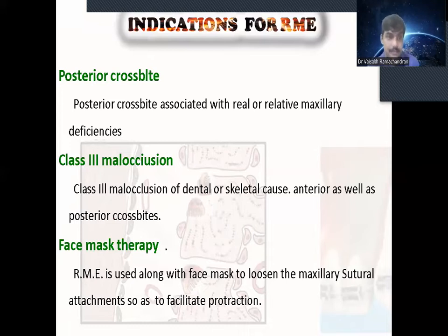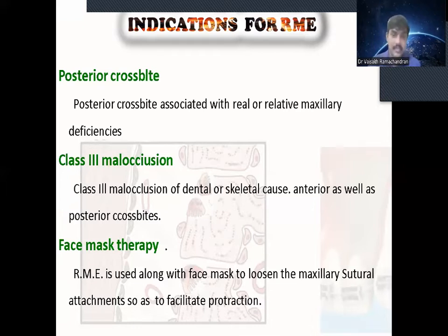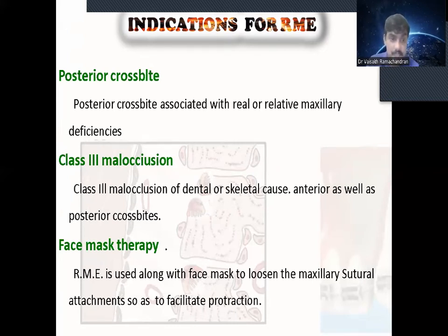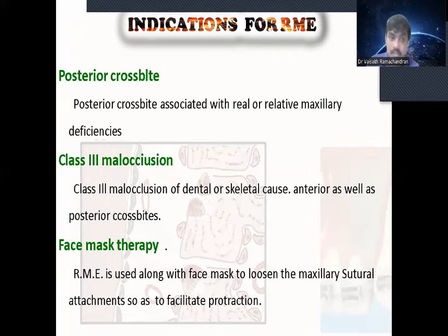What are the indications of RME? The first one is posterior crossbite. The posterior crossbite is associated with real or relative maxillary deficiency. If there is any maxillary deficiency, the chance of posterior crossbite is more. The second one is Class III malocclusions — Class III dental or skeletal. We can use RME mainly for posterior crossbite correction and also anterior or posterior crossbite correction.